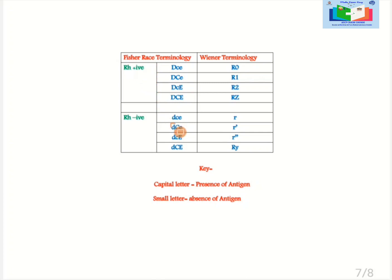Going down in Fischer terminology in case number 1 there is a small d, C and E, it means all 3 are absent. As here again Rh negative is mentioned due to the fact that all 4 cases contain small d so this is why Rh negative is mentioned. In second case small d, capital C and small e, so C is present and both small d and e are absent. In case number 3 only E is present. In last case D is absent and C and E are present.